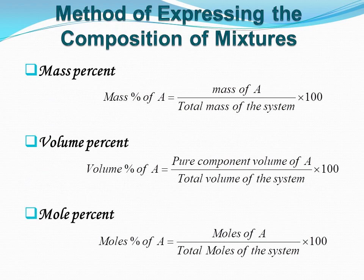Next, we come to the method of expressing the composition of mixtures. Various methods are used to express the composition of mixtures of solids, liquids, and gases. The methods given here are explained by considering a system composed of two components, namely A and B. The same methods are used on systems containing more than two components.